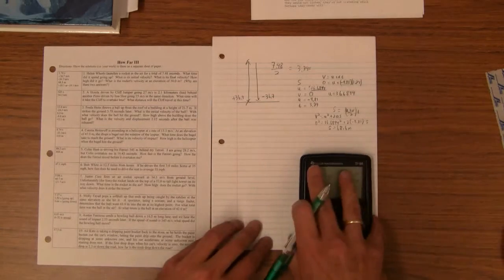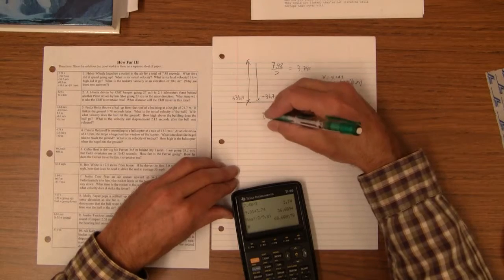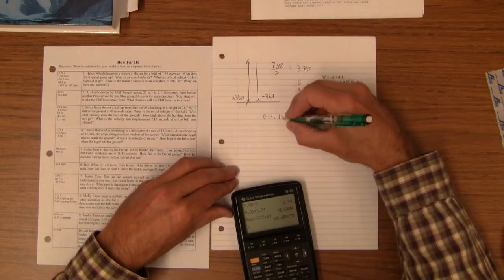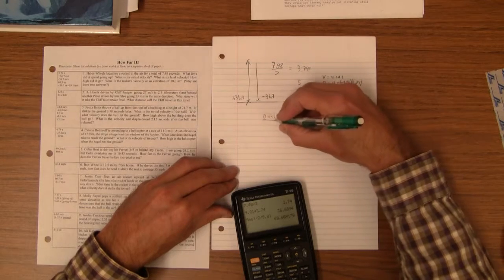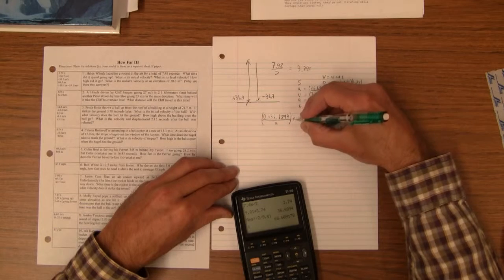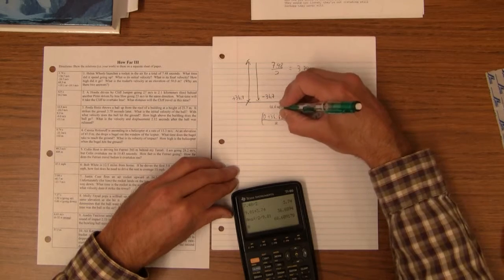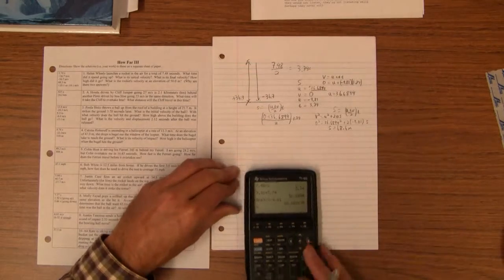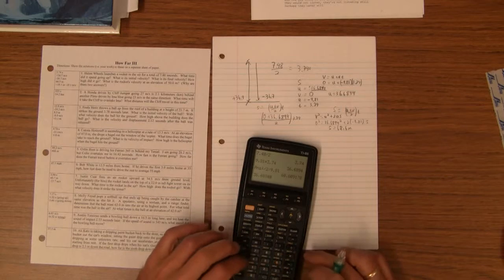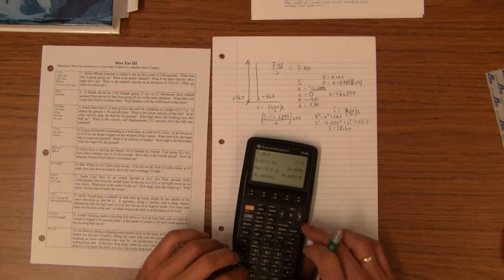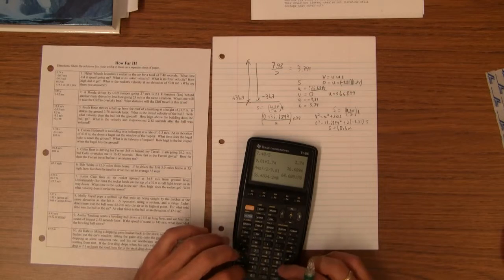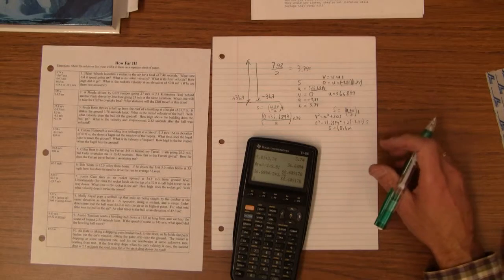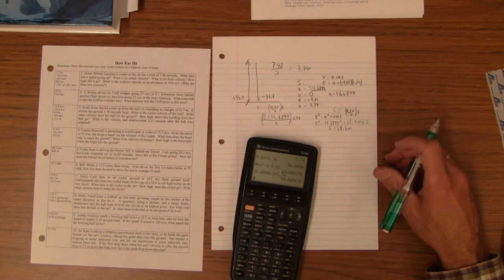The other thing I could have done to solve for the height was just go 0 plus 36.6894 times 3.74. In fact, it's probably easier to do this. I'm using the U plus V over 2 times T. So 36.6894 divided by 2 times 3.74 also gives you the same exact number. That works. Lots of ways to do this.